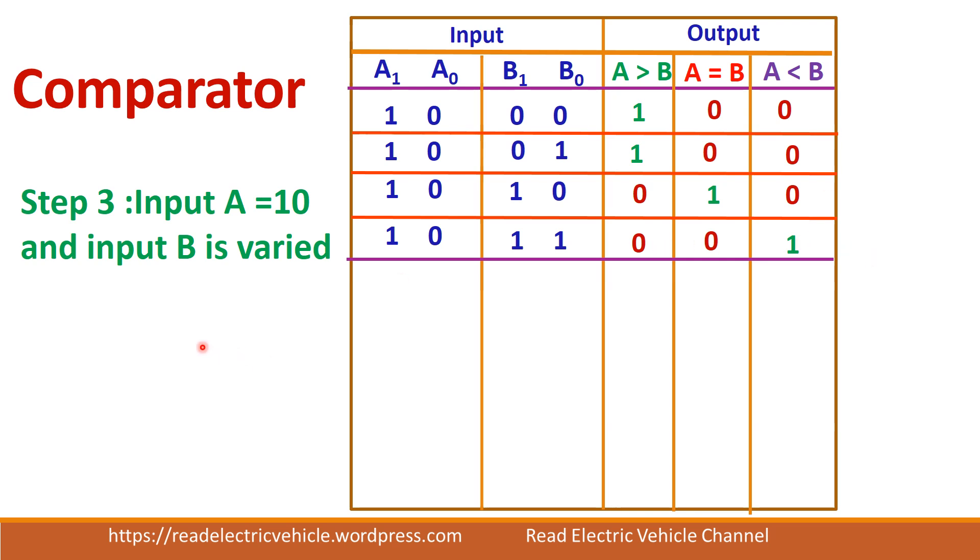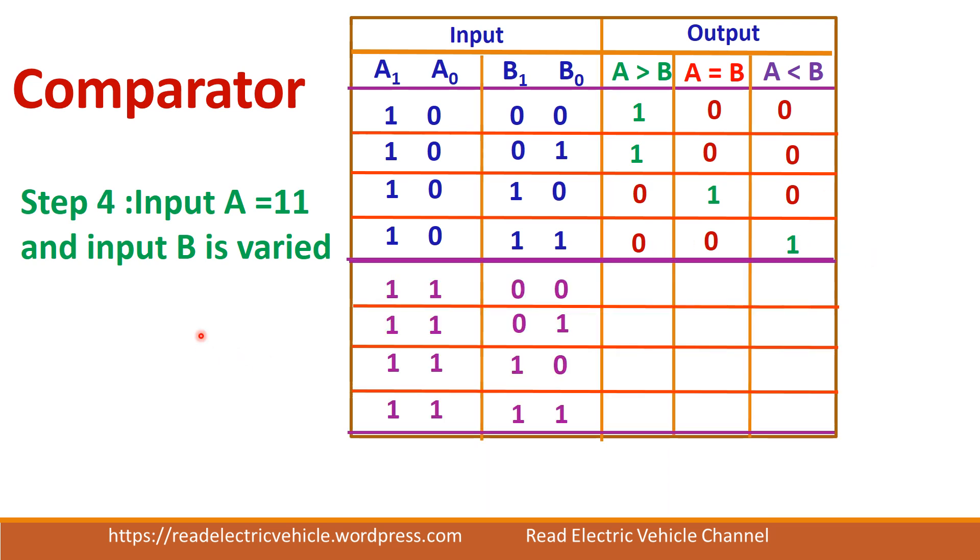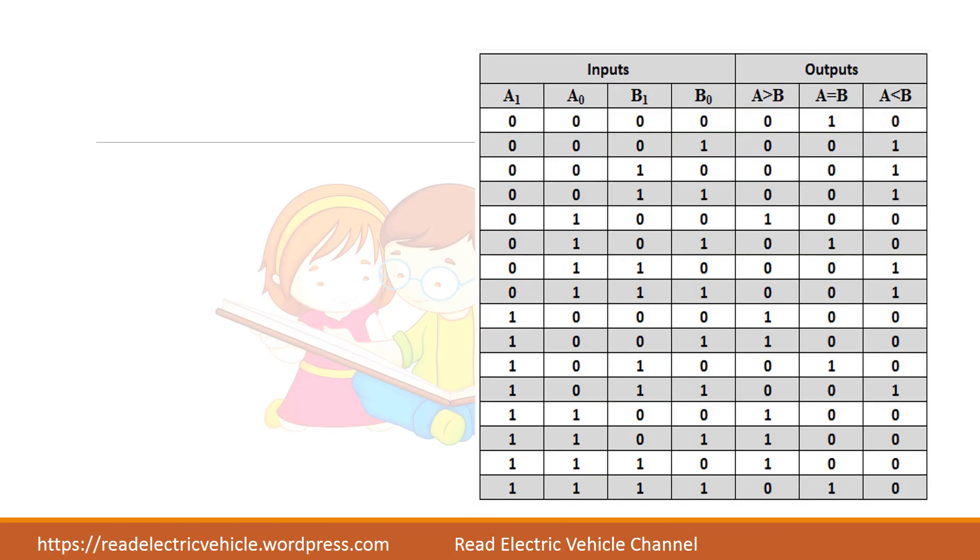Now we will go to fourth step. Here we have A equal to 1, 1 and B is varied. So first case A is greater than B. Second case also A is greater than B. Third case also A is greater than B. Fourth case A and B are equal. Now we have finished the comparison.